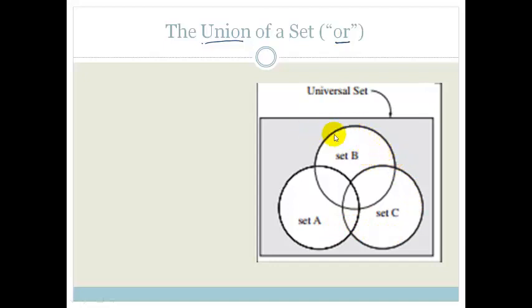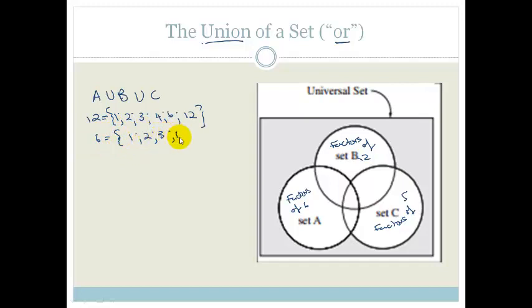So in other words, if I had to write this, I would write A union B union C. That would mean I want all the numbers in A and B and C, or A or B or C. In other words, if we had to say, for example, this was the factors of 6, this was the factors of 12, and this was the factors of 5, your factors of 12 are 1, 2, 3, 4, 6, and 12. Your factors of 6 are 1, 2, 3, and 6.